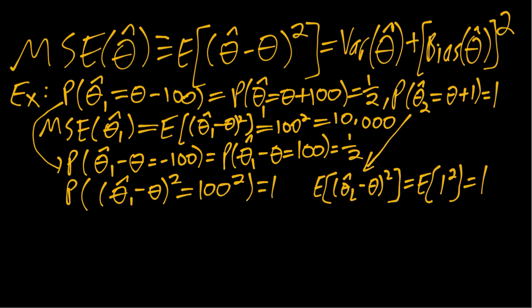So in this case, remembering that mean squared error quantifies how bad the estimator is, 10,000 is much worse than one. So in other words, theta hat one is much worse than theta hat two. Conversely, theta hat two is much better than theta hat one.